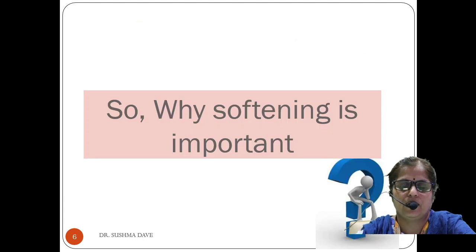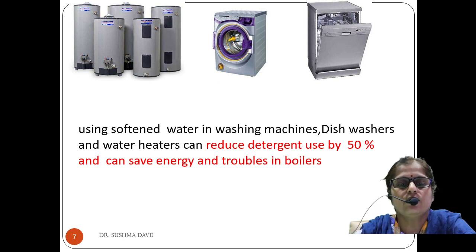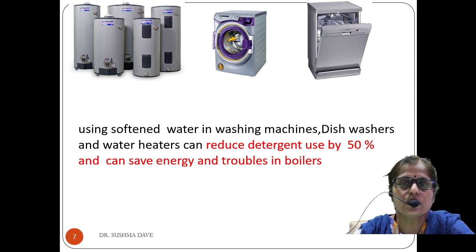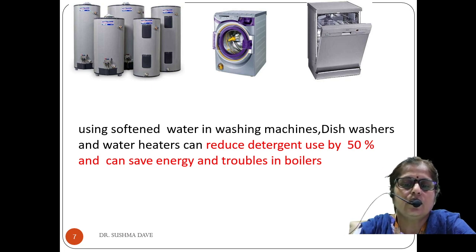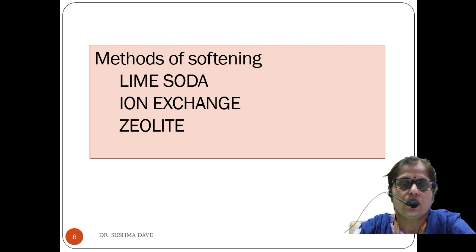Why is softening important? When we use hard water in various appliances like geysers, boilers, washing machines, or dishwashers, they consume more detergent and more electricity because of the formation of scale and sludge. When we use soft water in washing machines, dishwashers, and water heaters, the use of detergent is lessened by 50% and we can save energy.